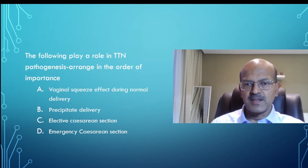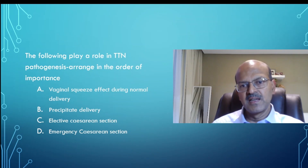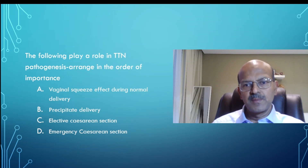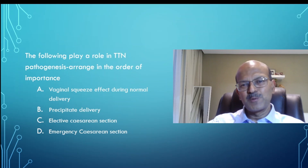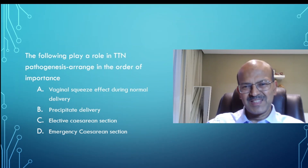To put it in sequence: elective cesarean section comes first, emergency cesarean section would come second if there was no labor process, then precipitate delivery, and then normal delivery with a vaginal squeeze. I hope this aspect is clear. Please do like and share. Thank you.